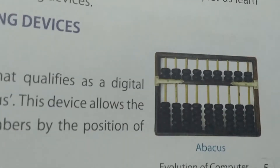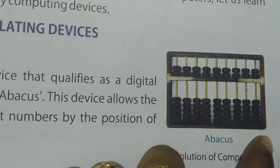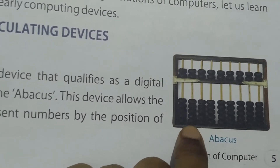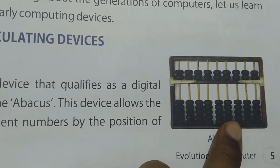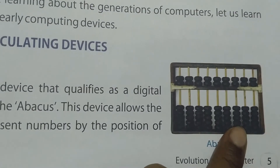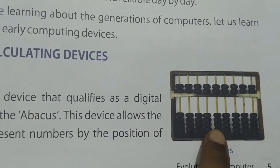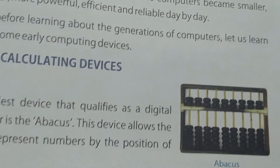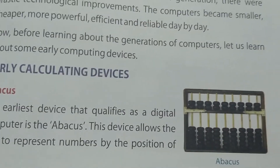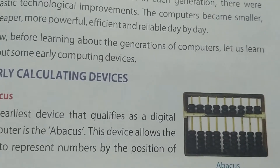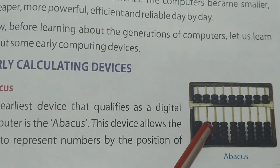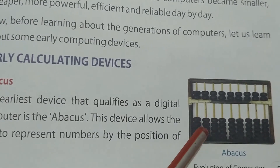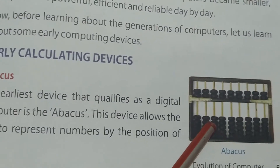The abacus consists of a wooden rack with beads in it. These beads represent numbers, and by changing the position of these beads we can easily do calculations like addition and subtraction. This abacus was invented around 600 BC and was used to carry out simple addition and subtraction easily and rapidly.